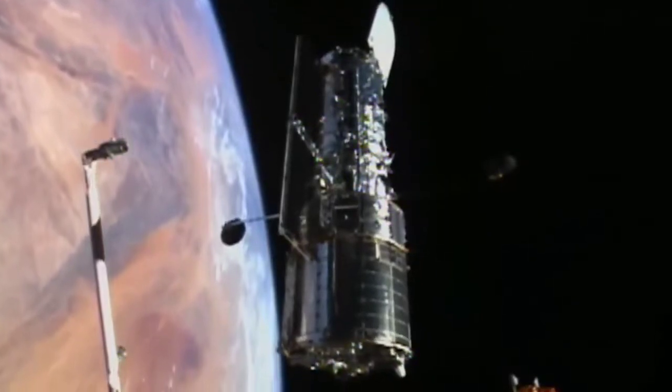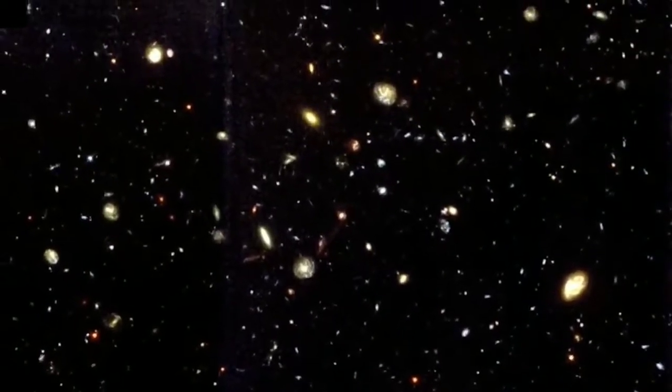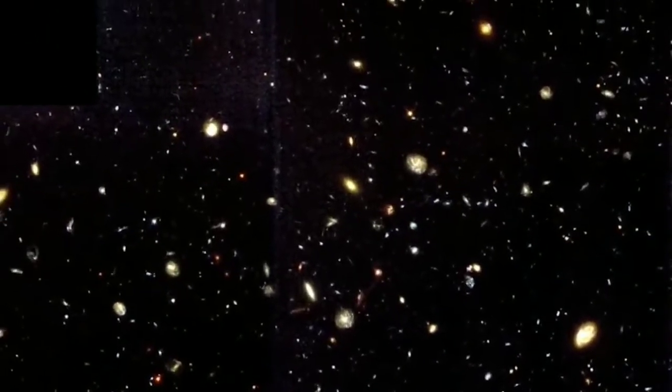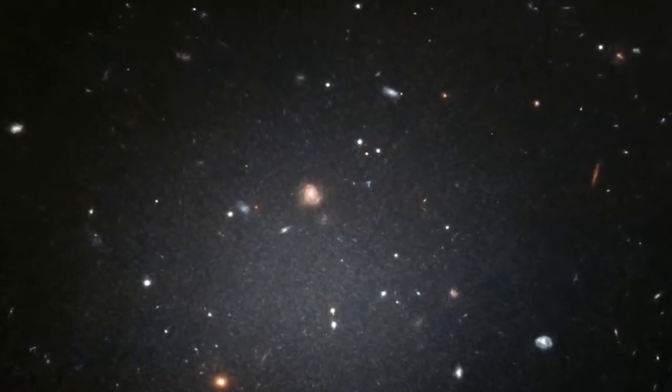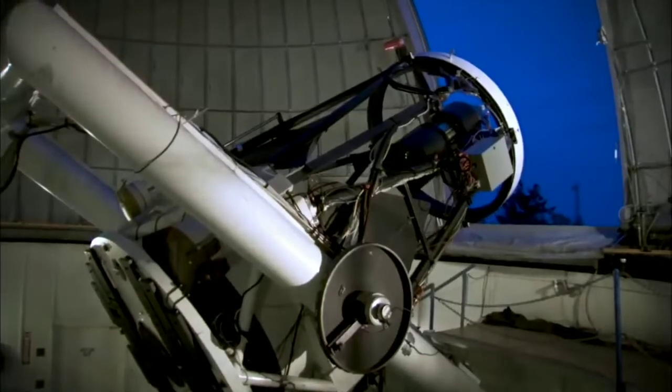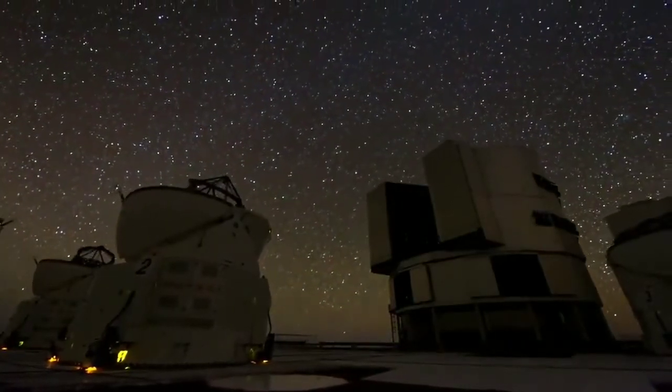Despite this, Hubble's best images have come and gone, and the limitations of physics will likely stop it from seeing anything dimmer or further than it already has. In order to observe the furthest and dimmest objects in the universe, you need an extremely high-resolution telescope, and the ability to capture as much light as possible.